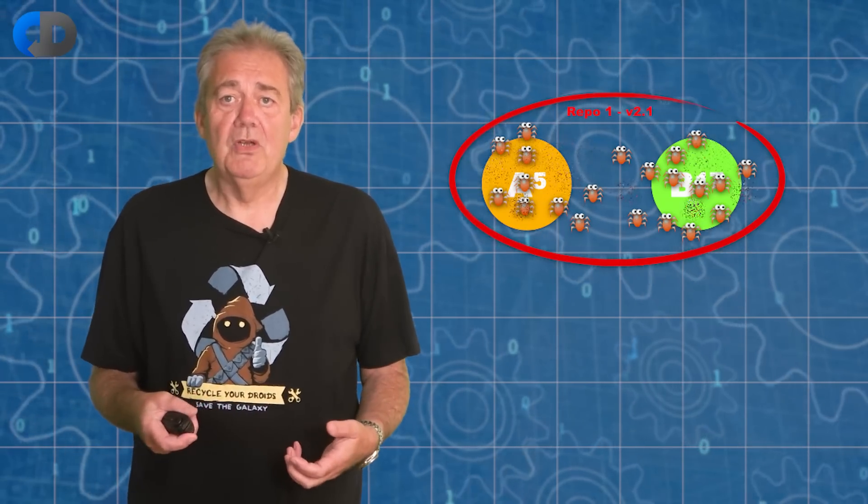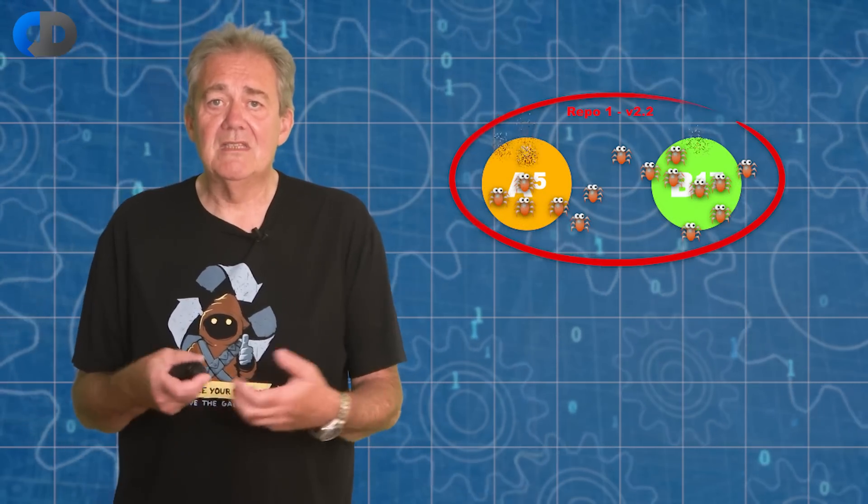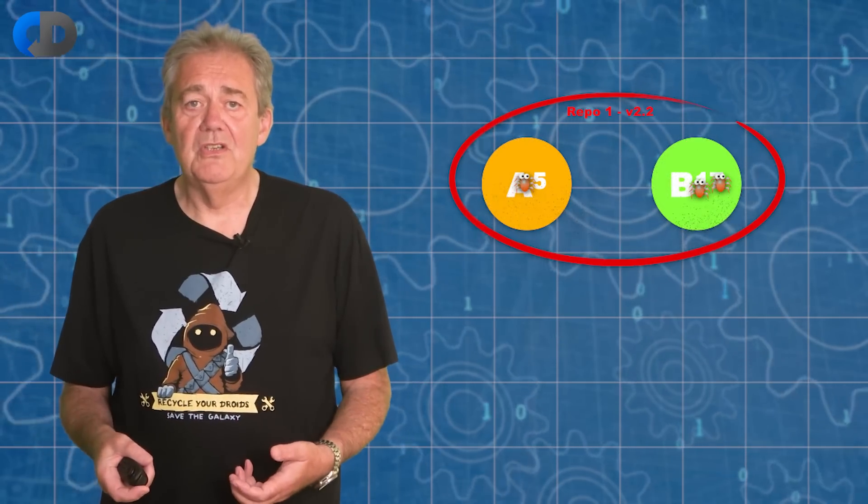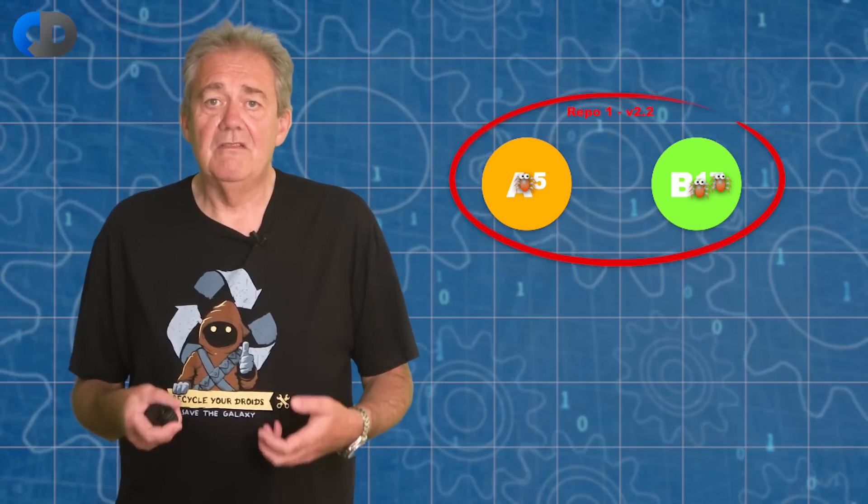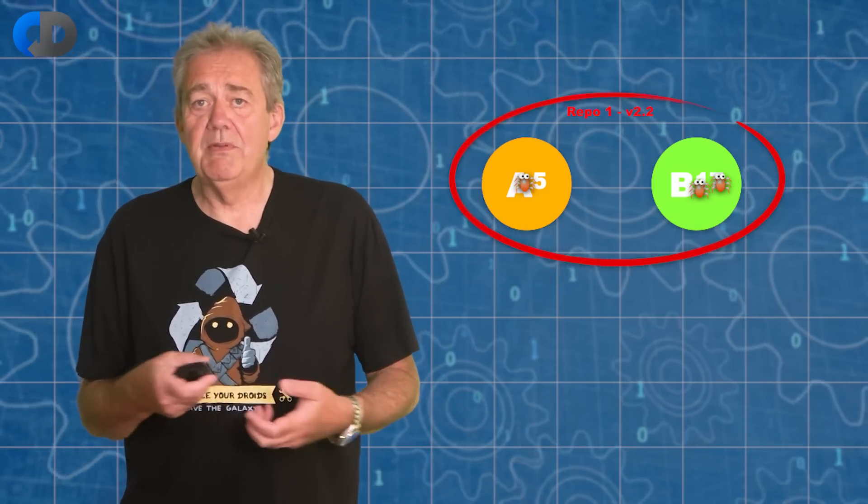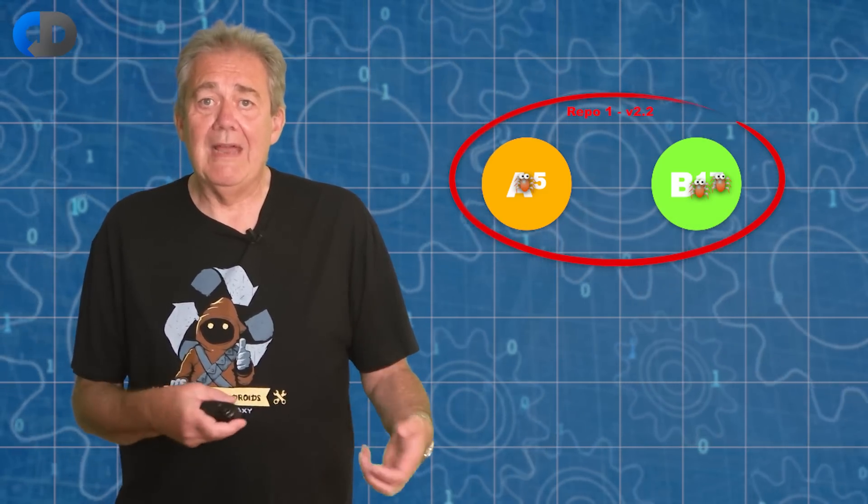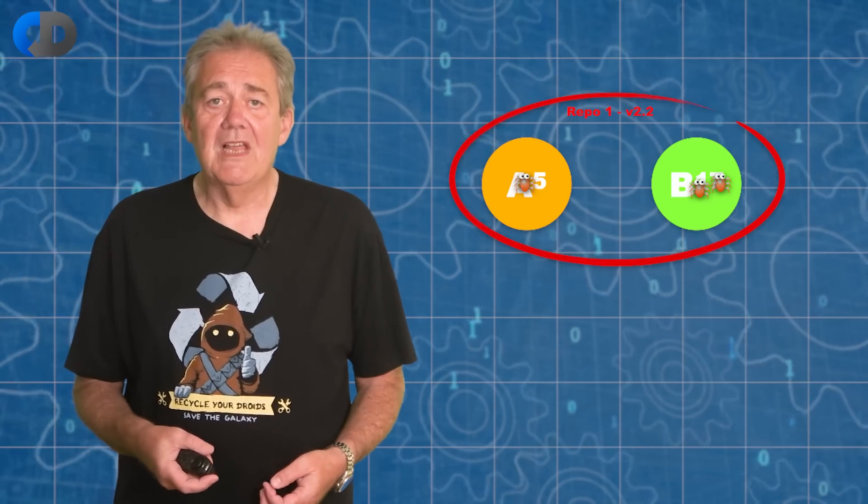If we fix 15 of the bugs in release 2.1 and 16 in version 2.2, we can now be confident that version 2.2, as long as it was built on top of 2.1, will now have only three of the original bugs left.